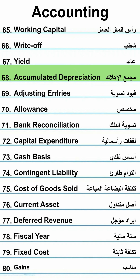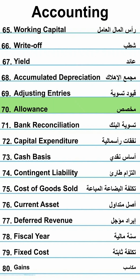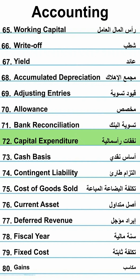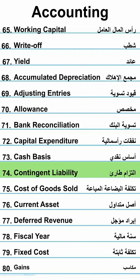Accumulated depreciation — Majma al-ehlak. Adjusting entries — Qiyu al-taswee. Allowance. Bank reconciliation — Teswiat al-masraf. Capital expenditure — Nafqat Raxmaliya. Cash basis — Asas Nagli. Contingent liability — Altizam Tariq.